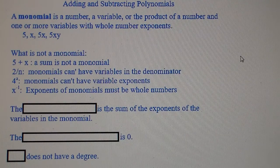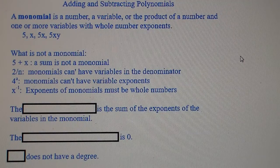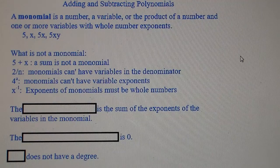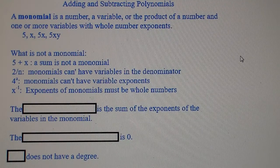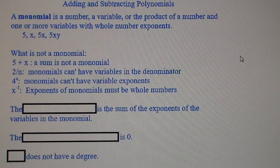A monomial is a number, a variable, or the product of a number and one or more variables with whole number exponents. What is NOT a monomial? 5 + x is not a monomial because a sum is not a monomial. 2 divided by n is not a monomial because monomials can't have variables in the denominator. 4 to the power of a is not a monomial because monomials cannot have variable exponents.